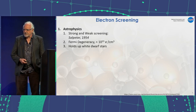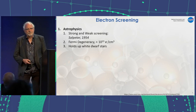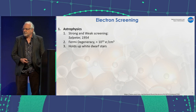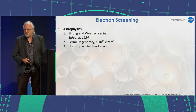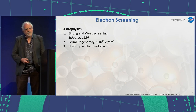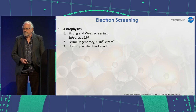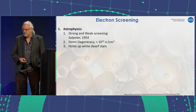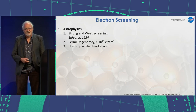Electron screening was really first discovered in the 1940s. Salpeter, in 1954, wrote a paper on strong and weak screening. He talked about strong screening in Fermi-degenerate matter, where you have on the order of 10 to the 23rd electrons per cubic centimeter. It's what holds up white dwarf stars, so obviously it has interest in astrophysics.